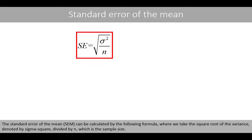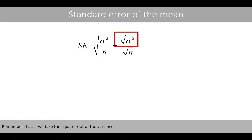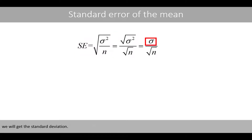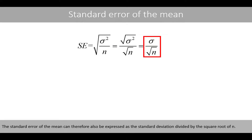The standard error of the mean can be calculated by the following formula, where we take the square root of the variance, denoted by sigma squared, divided by n, which is the sample size. Remember that if we take the square root of the variance, we will get the standard deviation. The standard error of the mean can therefore also be expressed as the standard deviation divided by the square root of n.